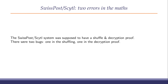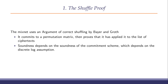We found two errors in the maths underlying those shuffling and decryption proofs. There were two different bugs: one affected the proof of shuffle, and the other affected the proof of decryption. We'll talk about each one at a time. First, think about the shuffle proof.